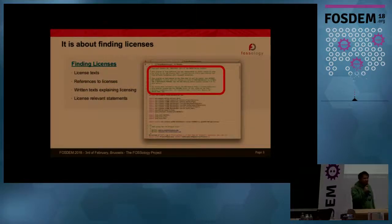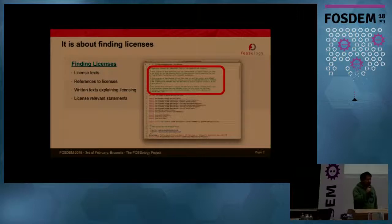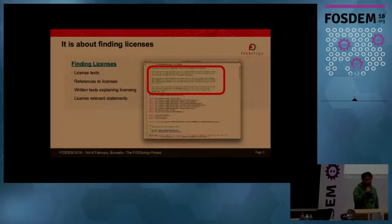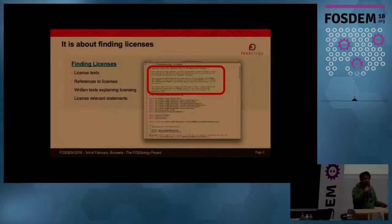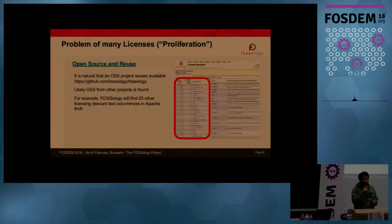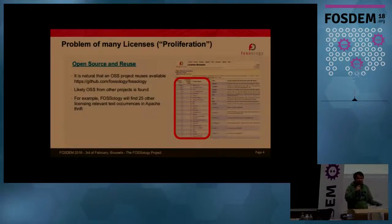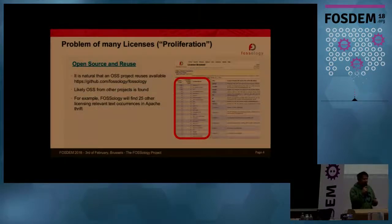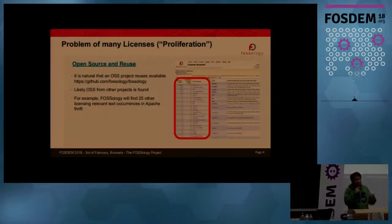Fossology is basically about licenses. In open source software licensing there are two areas involving scanners. One type of scanner finds open source software that has been copied into proprietary products. The other finds license statements in open source software. Fossology is about finding license statements in open source software. Why is that difficult? Because open source software today is made of other open source software — it's natural to find pieces of other packages inside a package, and different packages have different licenses.